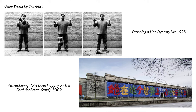Ai Weiwei and his team of artists and activists — working both inside and outside of China — went around different parts of Sichuan province and went to every house, asking people if they had lost someone in the earthquake. They recorded the name of every child they could document as well as their age. The name of this piece derives from a quote that one of the parents said about the child they had lost: 'She lived happily on this earth for seven years.'